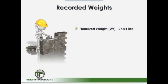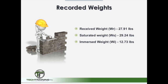Before moving on to the calculations, let's first review the data which we have obtained. The received weight, or WR, was 27.91 pounds. The saturated weight, WS, was 29.24 pounds. The immersed weight, WI, was 12.73 pounds, and the oven dry weight, WD, was 26.71 pounds.